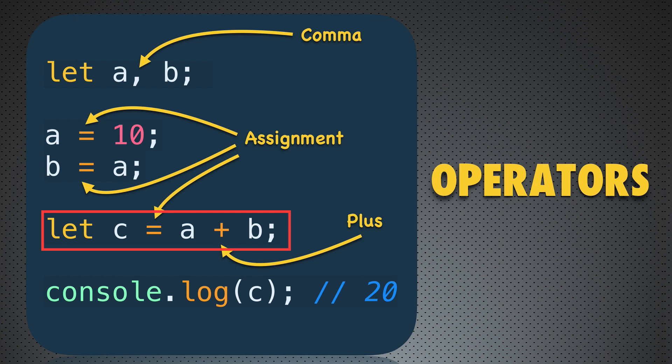As you can see, you can combine different operators in one line of code, and when you do so, operator precedence comes into play. For example, on this line of code we first sum the values of variables a and b, and only after that assign the result to variable c. This means the plus operator has higher precedence than the assignment operator. Usually the precedence of operators is natural and you will get what you expect.